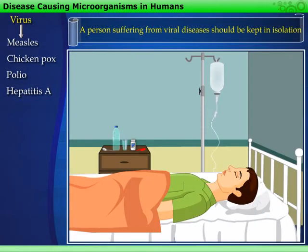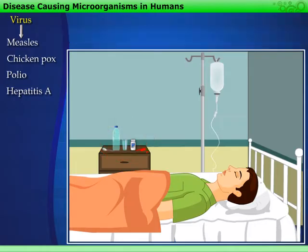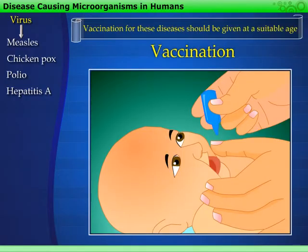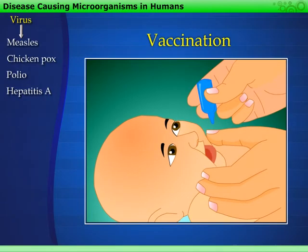A person suffering from viral diseases should be kept in isolation. Their personal belongings should not be used by others. Vaccination for these diseases should be given at a suitable age. The best way to prevent hepatitis A is through vaccination.